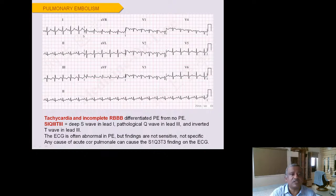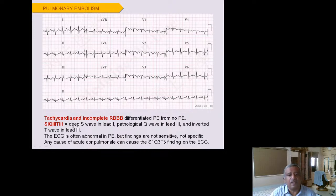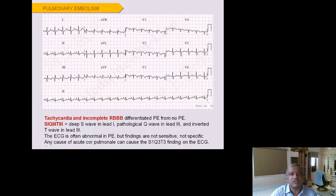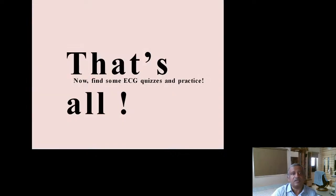For pulmonary embolism, remember the S1Q3T3 pattern: a deep S wave in Lead I, a pathological Q wave in Lead III, and an inverted T wave in Lead III. Always suspect pulmonary embolism when you see this combination. There may also be some degree of RVH if the pulmonary embolism has caused right ventricular strain. S1Q3T3 is the diagnostic ECG criteria for suspecting pulmonary embolism.